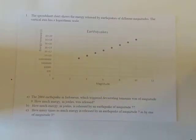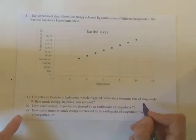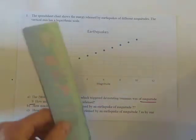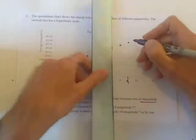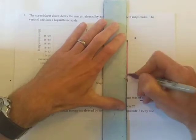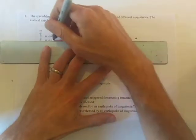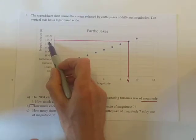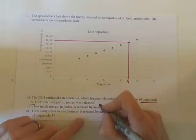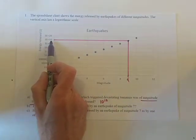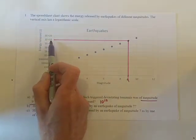For the first two parts we just need to simply read off the information from the scale. For part A, for tsunamis of magnitude 9, I'll put the lines in to make it clearer. We can see that's just 10 to the power of 18 — it's just a different way of writing 10 to the 18, as you often see it on spreadsheets.